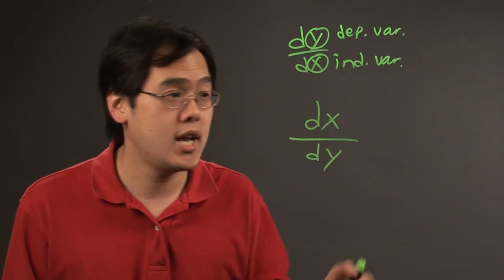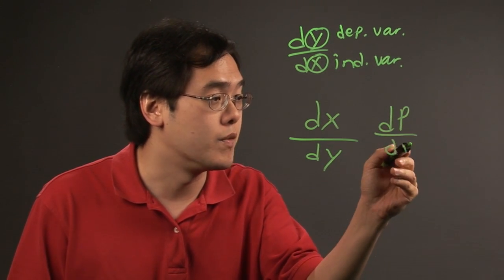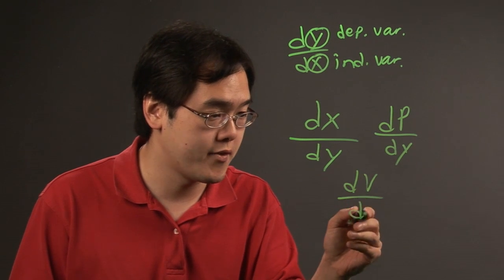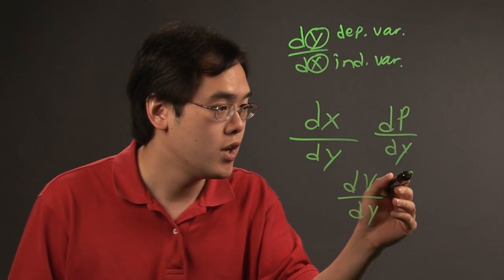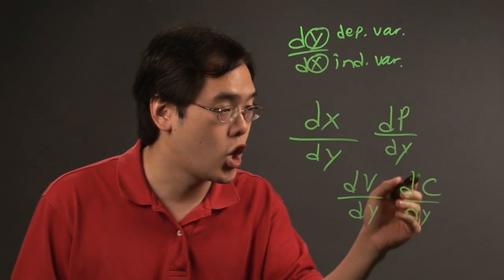Now, is it going to be x's all the time? Not necessarily, depending on what you have. You might have dp over dy, or dv over dy, if you're talking about volume, for example, or dc over dy, maybe cost.